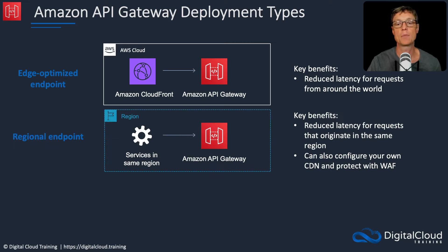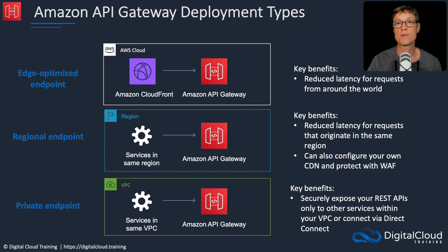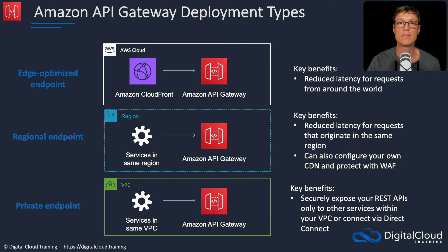Next, we have a regional endpoint. This is better if your services are coming from the same region; you can put a CDN in front and use a web application firewall as well. Lastly, there's a private endpoint, which will be fully within your VPC. It's a way of securely exposing your APIs only to services in the VPC, or to applications connected via a Direct Connect link.